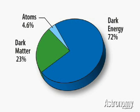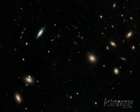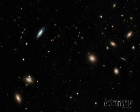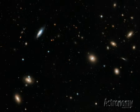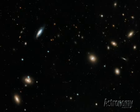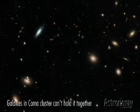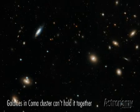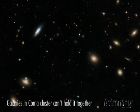If it's invisible, how do astronomers have any idea it's there? Dark matter interacts with ordinary matter through gravity, and its gravitational interaction is how astronomers first found out dark matter exists. In 1933, a Swiss astrophysicist by the name of Fritz Zwicky first proposed dark matter's existence.